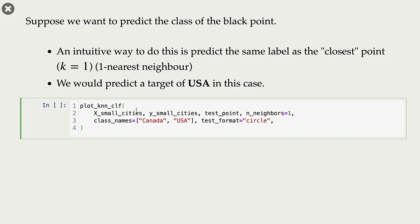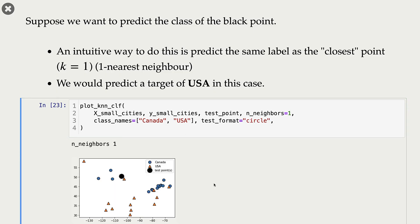For example, in our case, we want to predict the label of this black point. We find the closest neighbor of this black point. In our case, the closest neighbor is this red triangle, and the class associated with this red triangle is USA. So we assign the same class, USA, to our query point, which is this black circle.